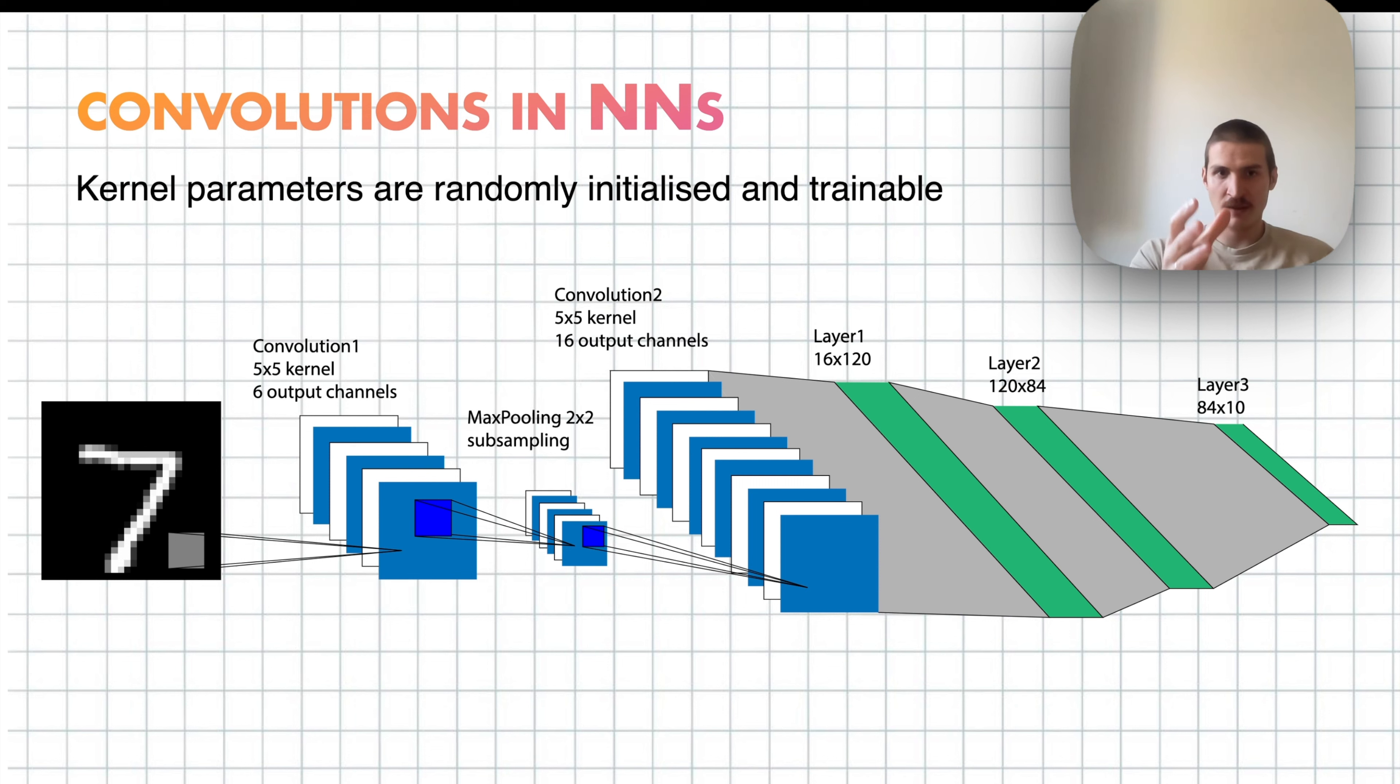This is actually the architecture that we are going to use to classify MNIST digits next. So we start with an image, we do five by five convolution with six output channels, then we shrink it down with max pooling, then we apply another set of convolutions with 16 output channels. And that we use as an input to our dense layers, and then classification.